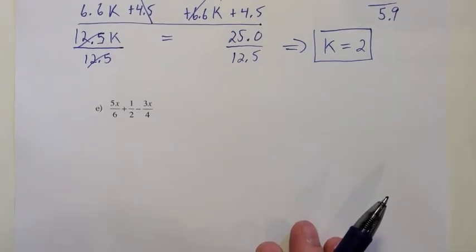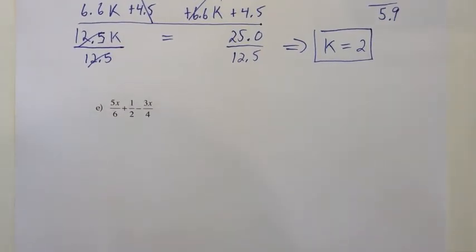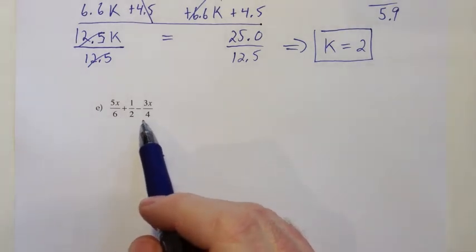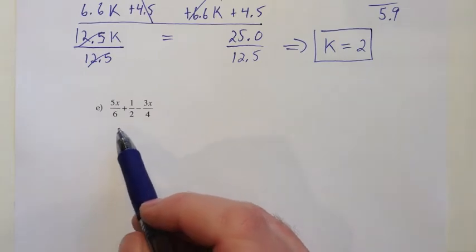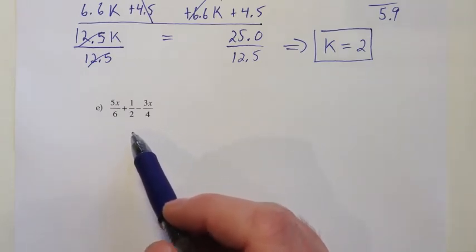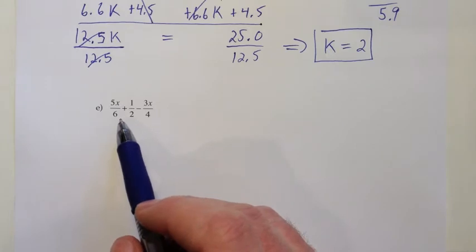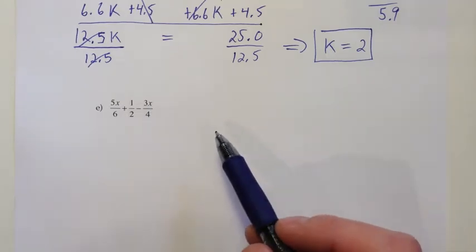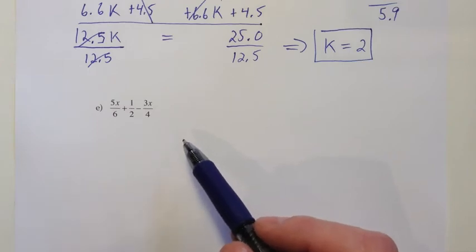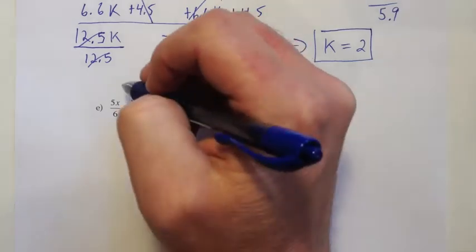On the next one, we're starting off without an equal sign, so that means we have an expression. When we have an expression, we want to simplify by combining like terms. There could be a temptation to get rid of the fractions by multiplying by the LCD of 6, 2, and 4 — which would be 12. But you can't multiply by 12 unless you can multiply both sides by 12. Without an equal sign, you don't have two sides, so that's not appropriate here.